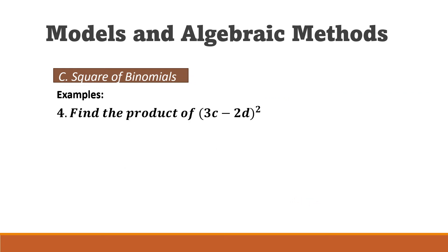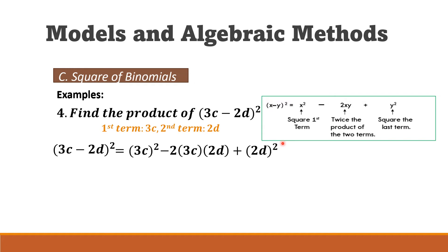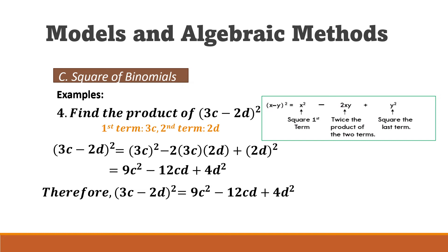Example four: (3c − 2d)². The first term is 3c, the second term is 2d. We square the first term minus 2 times the product of the first and second term, plus the square of the second term. The result is 9c² − 12cd + 4d².